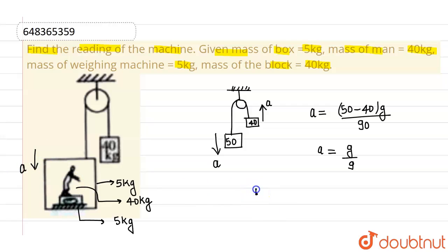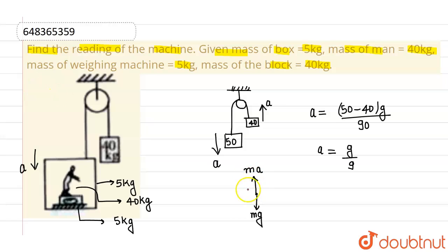Therefore, on this particular man there will be a pseudo force acting upwards, because pseudo force is always opposite to the direction of acceleration. One force acting downward is the man's weight (mass × g), and there is a normal reaction N between the machine and the man.